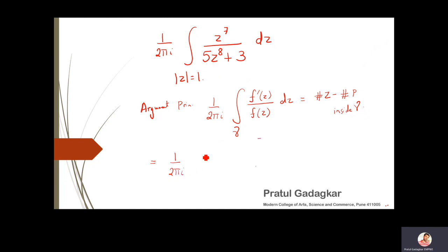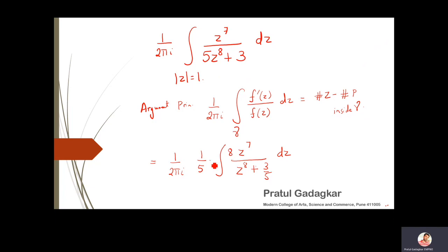In this problem, when I take one over two pi i and pull out the five, this becomes one over five times the integral of z raised to seven over z raised to eight plus three by five dz. The derivative of z raised to eight is eight z raised to seven, so I'll multiply and divide by eight also. Now this looks like f' and this looks like f.